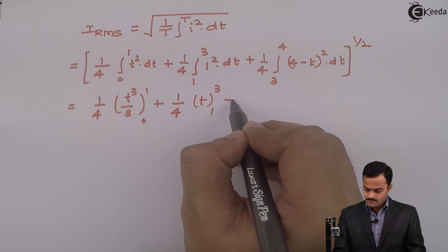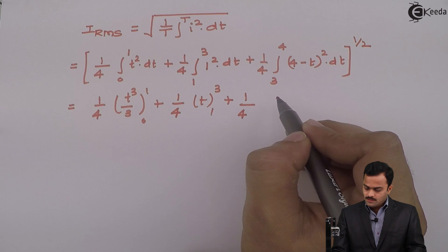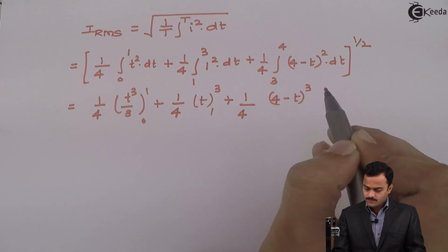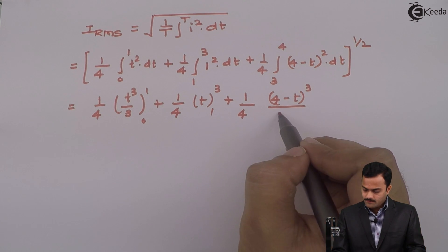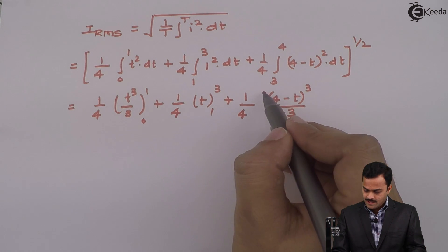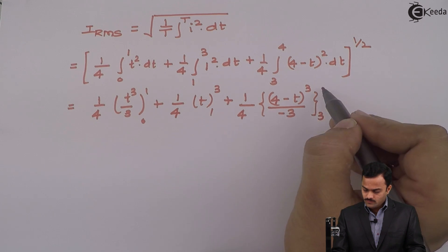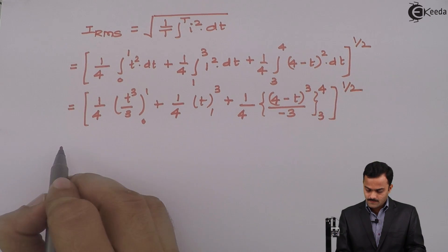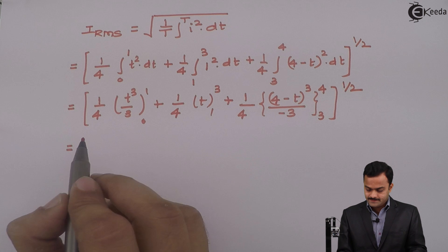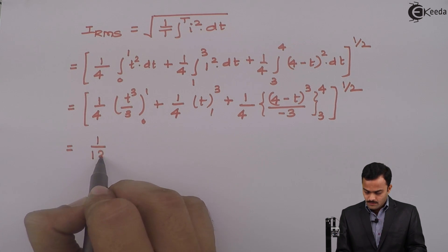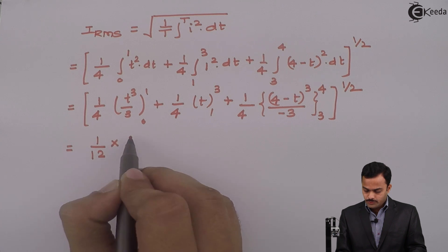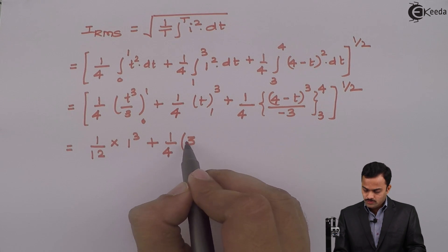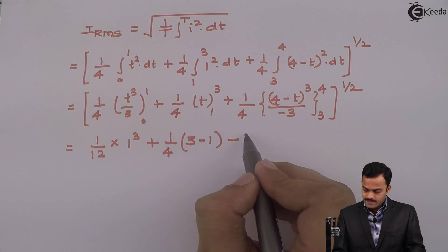Continuing the integration: the integral of (4 minus t) squared gives (4 minus t) cubed divided by minus 3, with limits 3 to 4. Ultimately we have to take the root of it. Applying the limits gives 1 by 12 times 1 cubed, plus 1 by 4 times (3 minus 1), minus 1 by 12.